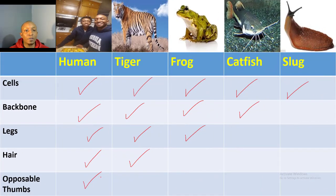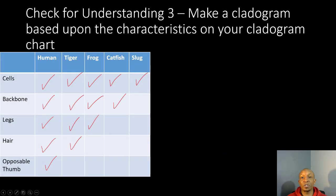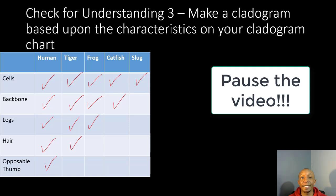Now let's see how you did. All of the organisms on this chart have cells — remember, in order for something to be living it has to have cells. Only four of the organisms have a backbone: the human, the tiger, the frog, and the catfish — a slug does not. Only three have legs: the human, tiger, and frog. Only two have hair: the human and the tiger. And only one organism has an opposable thumb — that would be the human. Now it's time for your third check for understanding: make a cladogram based upon the characteristics on your chart. You have three minutes, so pause the video now.